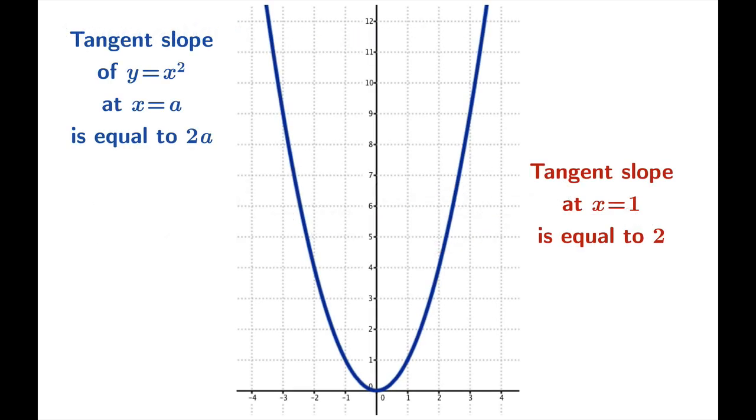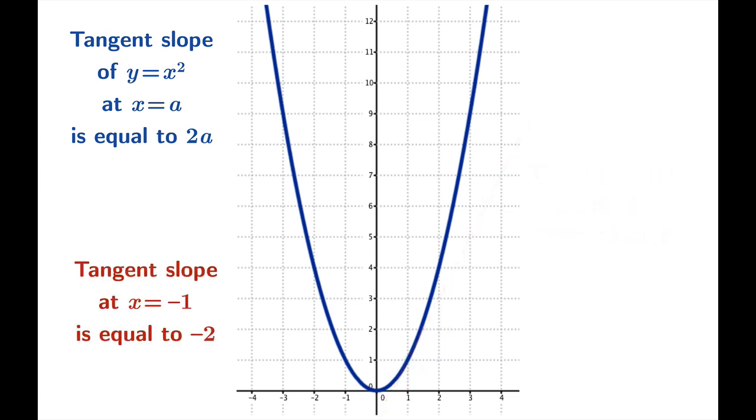So let's see what this does for us. The tangent slope of y equals x squared at x equals a is equal to 2a. So for example, what's the tangent slope when x is 1? Well, twice 1 is 2, so we expect that tangent slope to be 2. How about the tangent slope when the argument is negative 1? Twice negative 1 is negative 2, which again appears to be plausible.